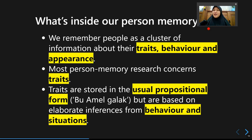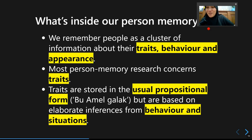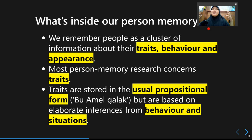We remember people as a cluster of information — a web of information that consists of different sets of concepts, including traits, behavior, and also appearance. For example, if you remember Donald Trump, the concepts involve his traits — whether he is abusive to his political opponents — his behavior, such as lying publicly in a press conference, and his appearance, like his very odd hairstyle. We keep a combination of traits, behavior, and appearance in our memory, but most likely we keep traits as the main information about a person.